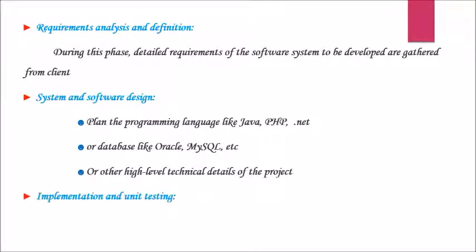Third level is implementation and unit testing. During this phase, the software design is realized as a set of software components. Components are tested ensuring each component meets its specification. After design stage, it is the build stage, that is coding the software.